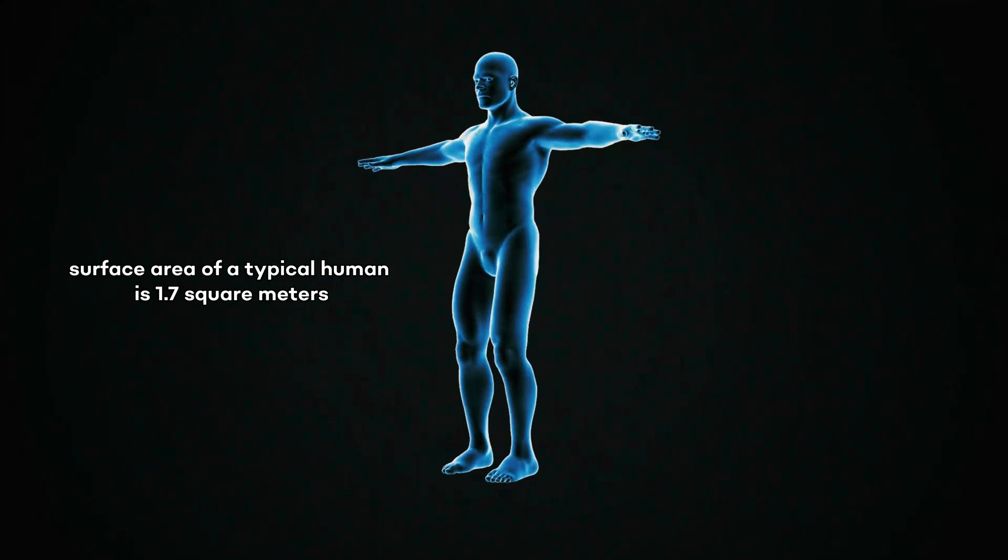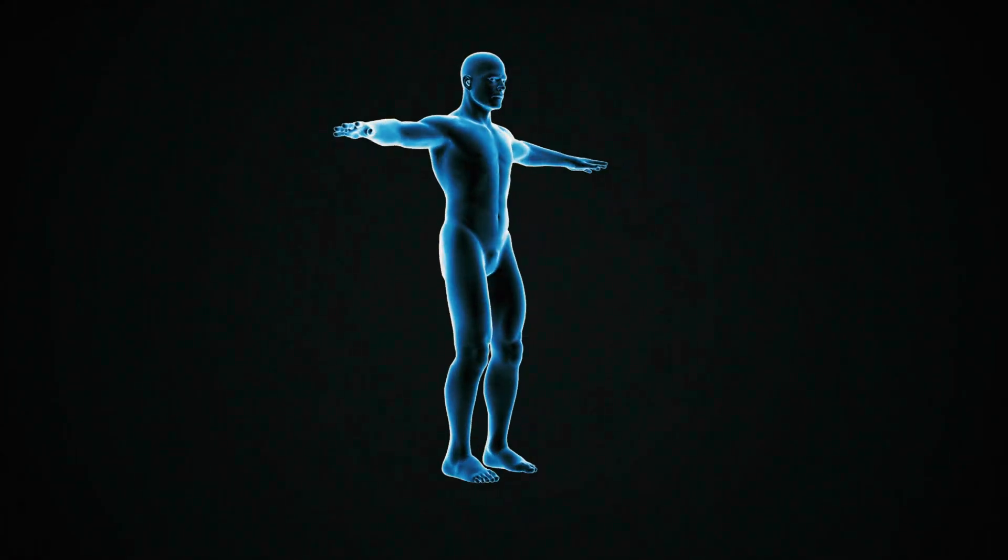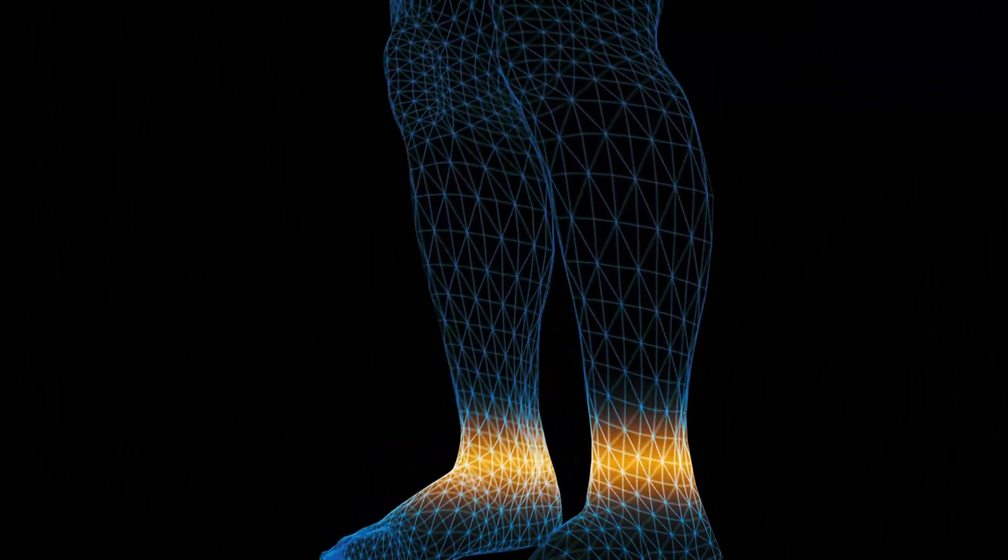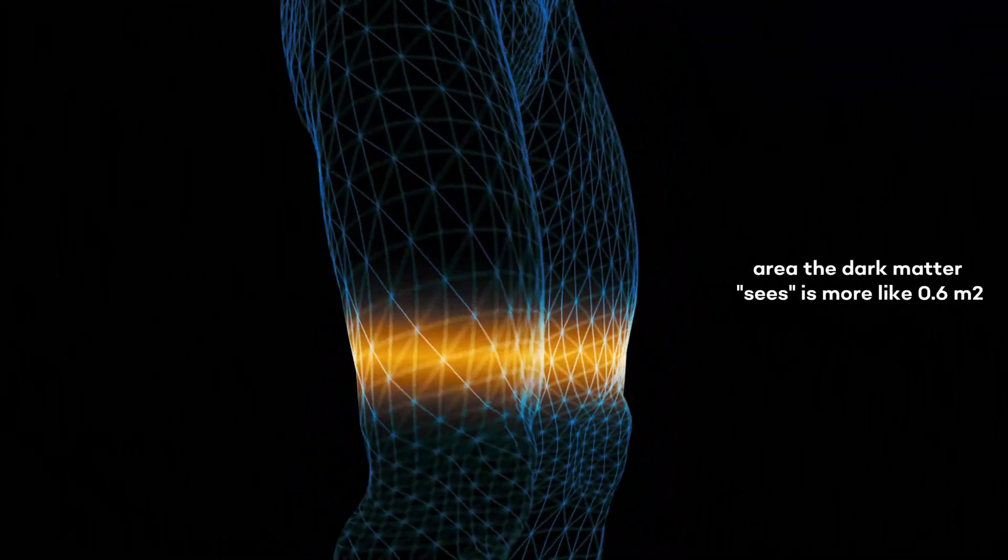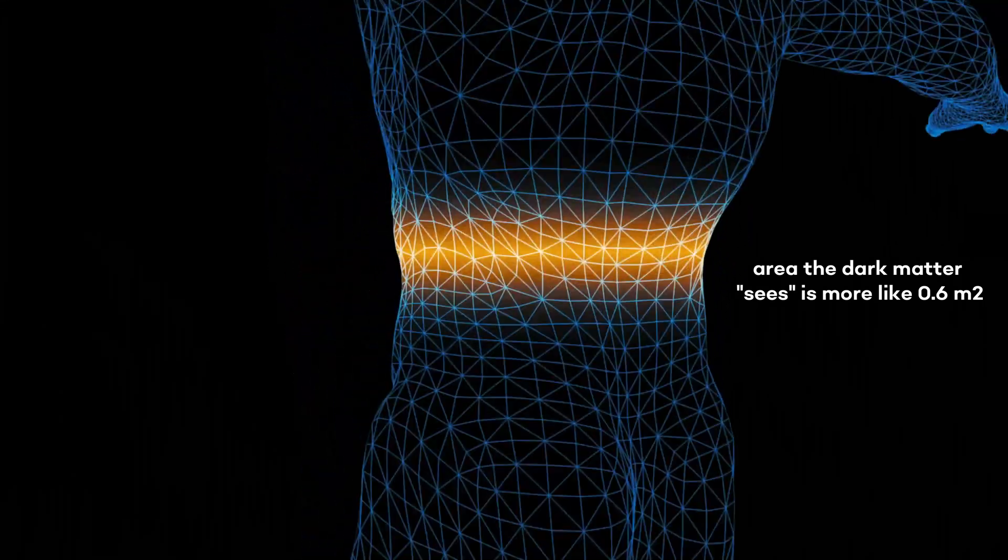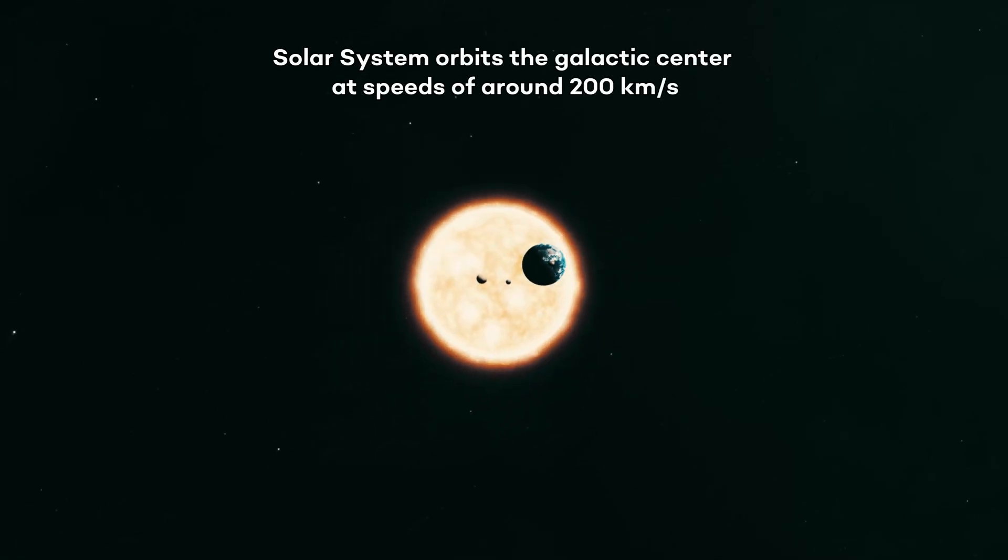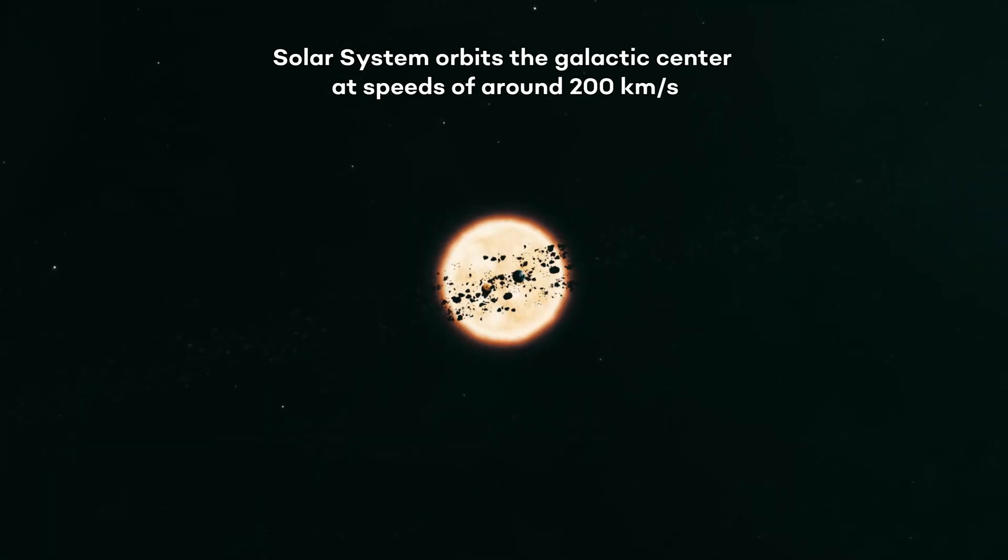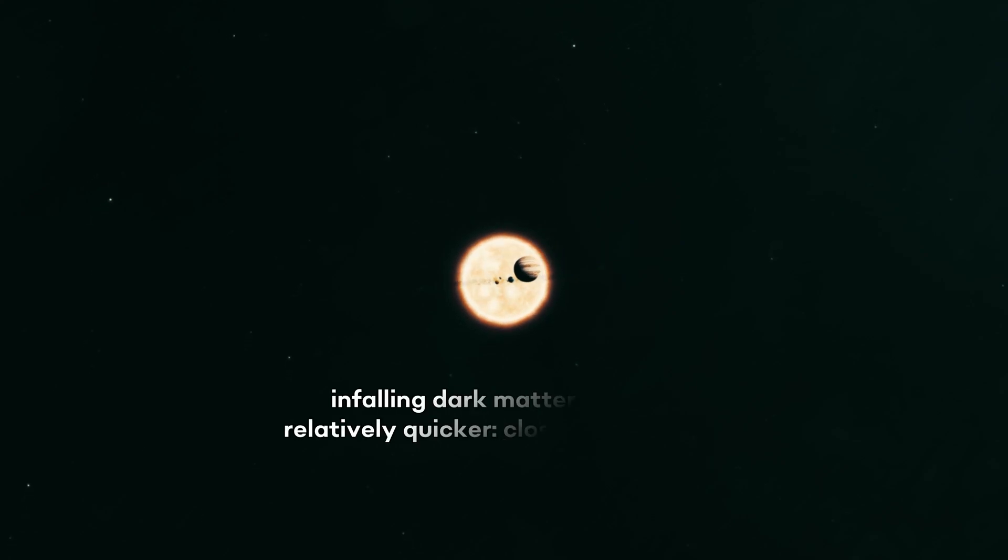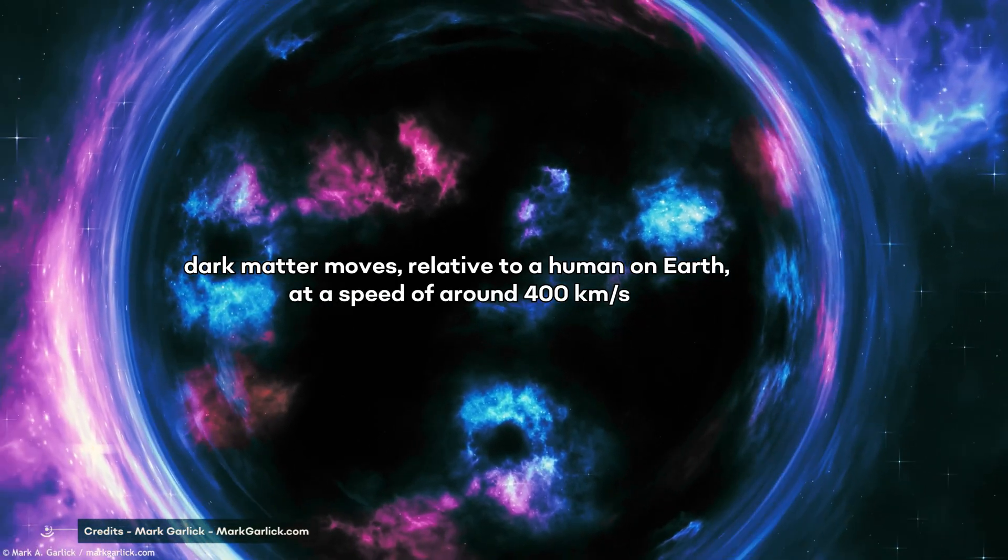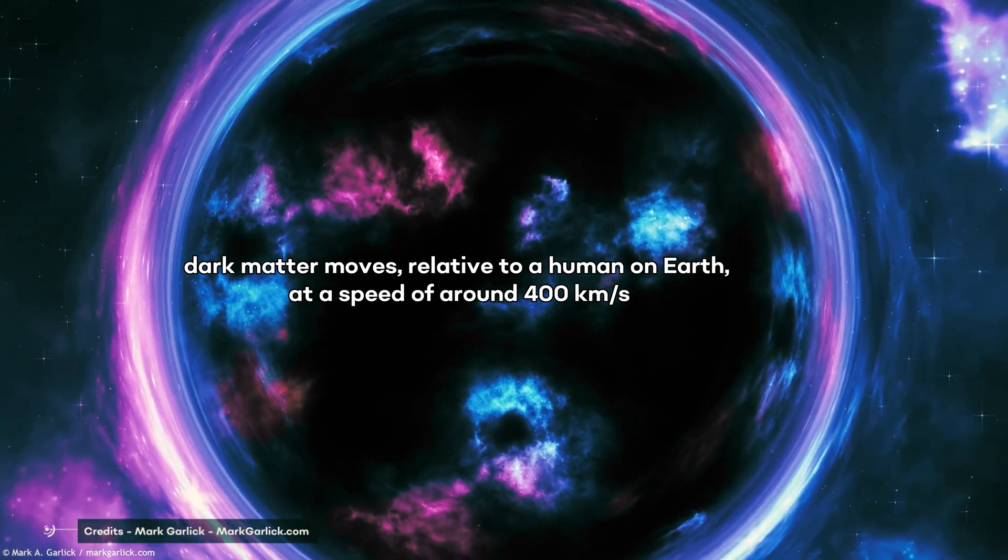The surface area of a typical human is 1.7 square meters. Since the dark matter comes in at a random angle, we can do a quick calculation and find a good estimate for the area the dark matter sees is more like 0.6 square meters. Our solar system orbits the galactic center at speeds of around 200 kilometers per second, but in-falling dark matter should be moving relatively quicker, close to 350 kilometers per second. All told, that means dark matter moves relative to a human on Earth at the speed of around 400 kilometers per second.